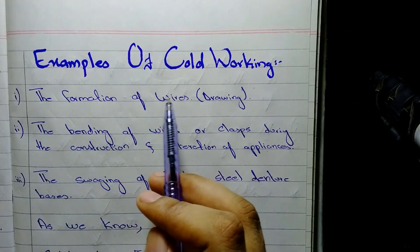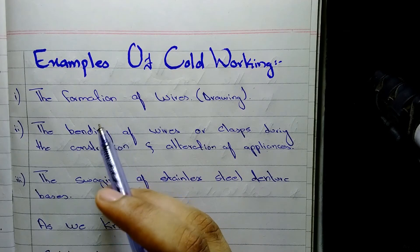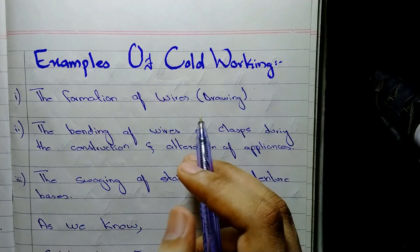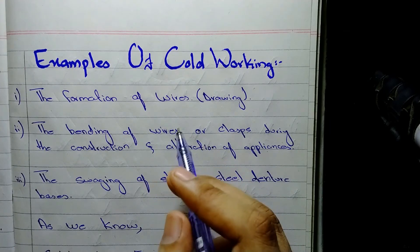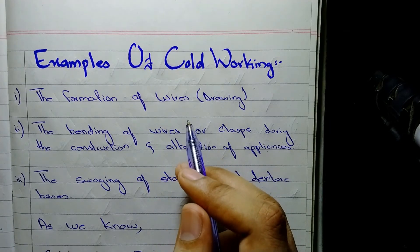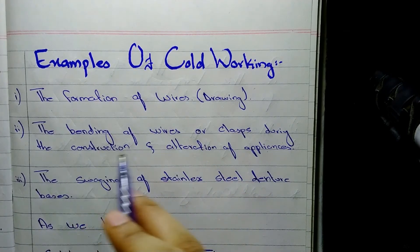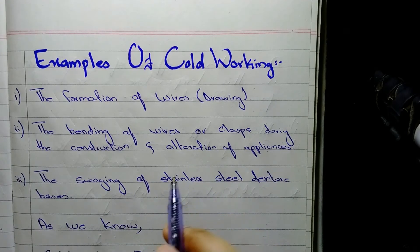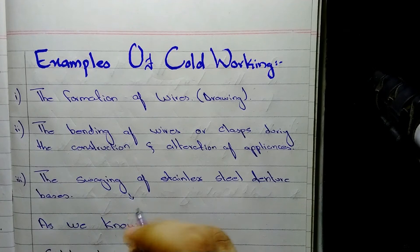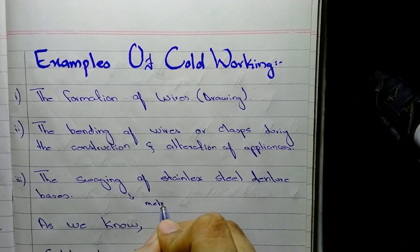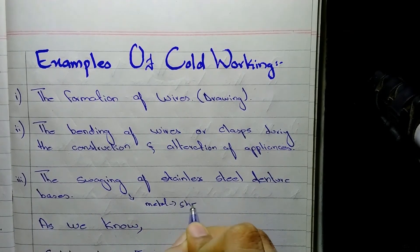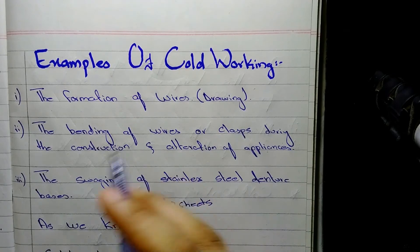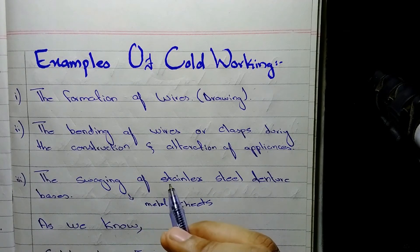Now the examples of cold working. First of all, cold working is used in the formation of wires through drawing, in which metal is allowed to go through circular dies with continuous reduction in diameter. Then the bending of wires or clasps during construction and alteration of appliances. And thirdly, the swaging. Basically swaging is used to convert metal into sheets, so the swaging of a stainless steel denture basis. These three are examples of cold working in dentistry.